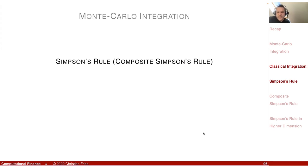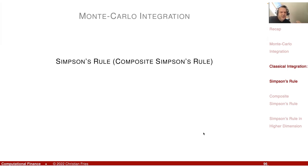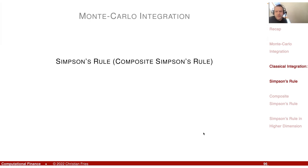Before looking more closely at Monte Carlo integration, I'd like to remind you of a classical integration method. The reason is that we will see the convergence rate of Monte Carlo integration, when moving to higher dimensions, is almost independent of the dimension — except that generating the vector scales linearly in the dimension. Classical integration methods scale exponentially. We'll see by comparison that at dimension 8, Monte Carlo is far more efficient. Let's look at the Simpson's rule and how integration moves to higher dimensions.